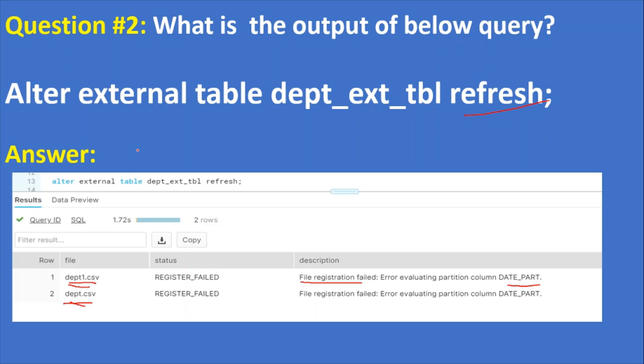But for these two files, there is no date as part of the file names, hence registration failed. That means the moment when you query the data from this table, data will be queried from only valid files, not failed registered files. These files are not registered to this external table because of error evaluating partition column, because there is no such date part from file names.